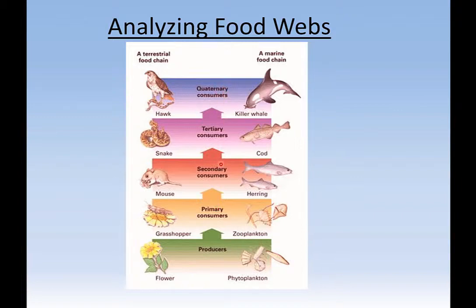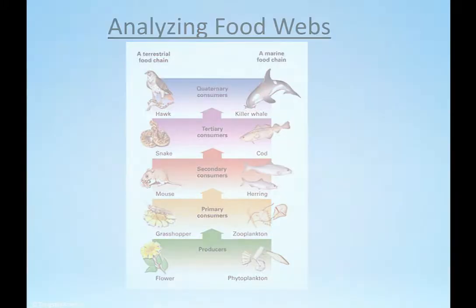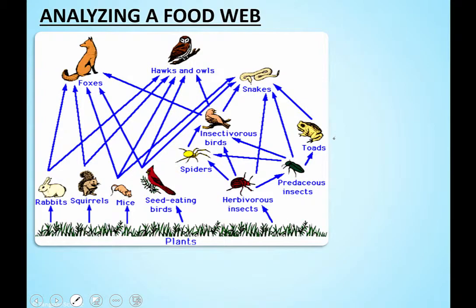Above the herbivores you've got three levels of carnivores: the secondary consumers, tertiary, and quaternary. The tertiaries eat the secondaries, the quaternaries eat the tertiaries, and the secondaries eat the primaries. These are carnivores, just in different categories based on what they eat. Remember those words because they're going to come up right now.